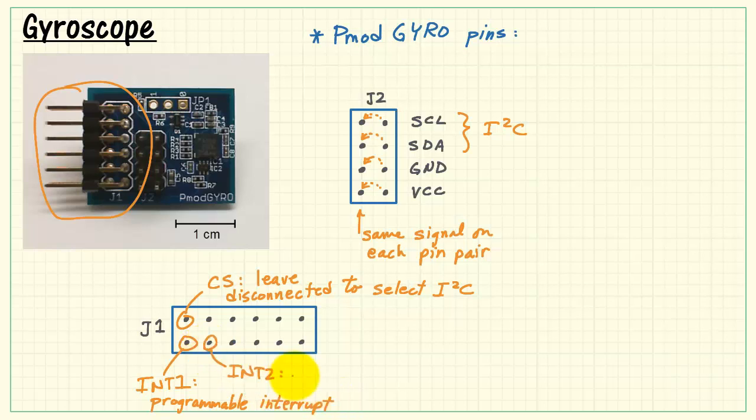We have the two interrupt pins down here. Interrupt number 1 is a programmable interrupt. Interrupt 2 can be used to signal data ready. We have additional ground and VCC pins located here.